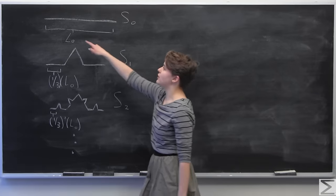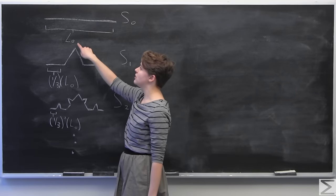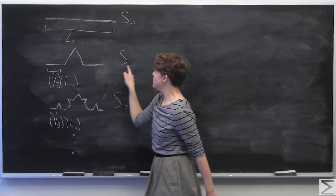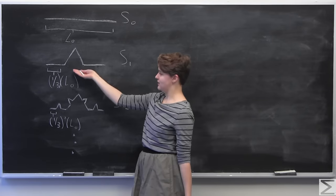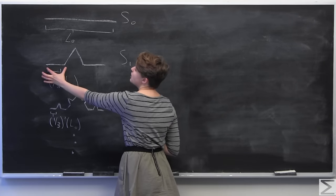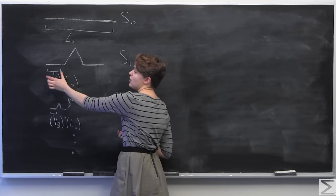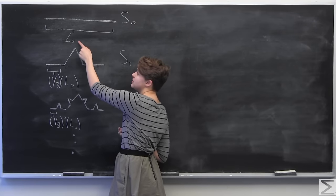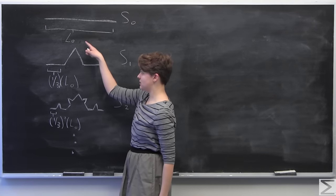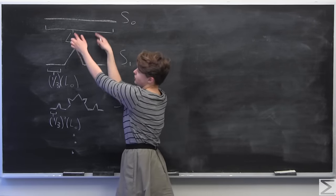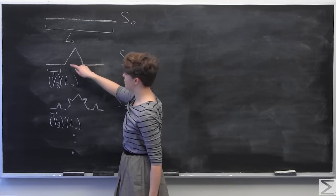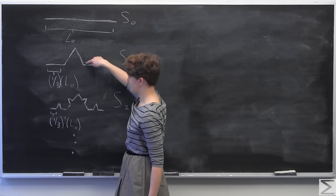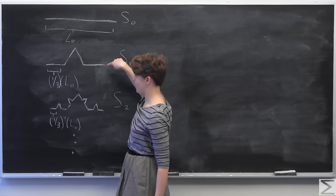Say we call the length of the first iteration L0. Then we can look at the length of the second one by saying, okay, so we know that this line segment has length of one third times the initial line segment, because that was how we created the second line segment. And we know that this has length one third, this has length one third, and this has length one third.